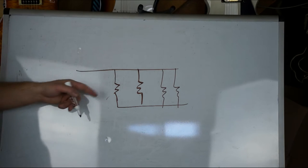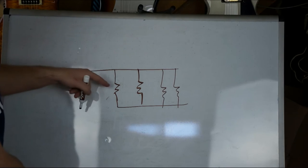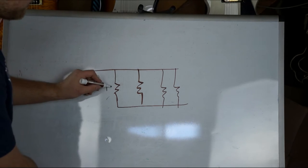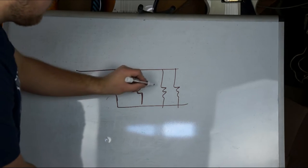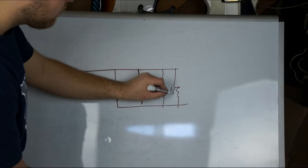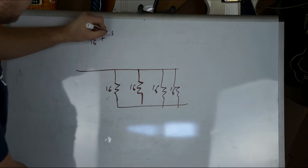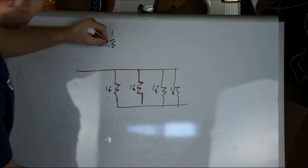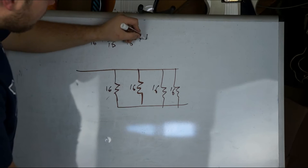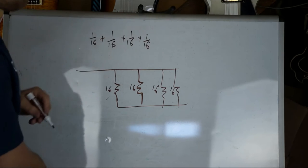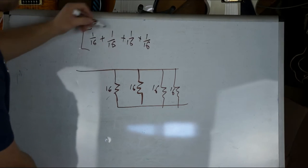So anyways, calculating this is the sum of one over the value. So if these are all 16, you would have one over 16 plus one over 16, right? Four times. And then all of that to the negative one.